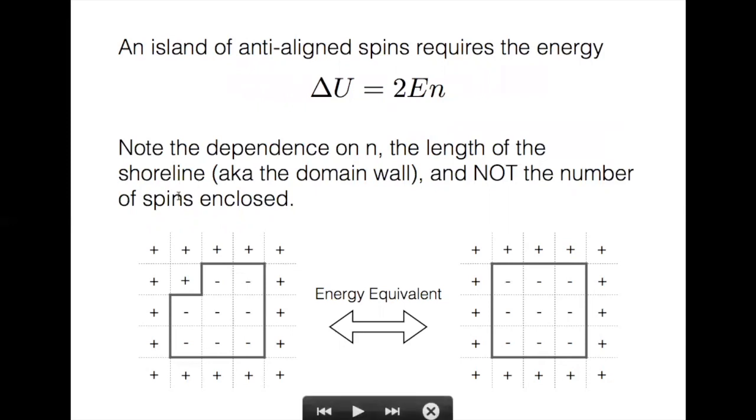So in this simple 5 by 5 example, even though the image on the right has one more spin enclosed, it is the energy equivalent of the picture on the left.